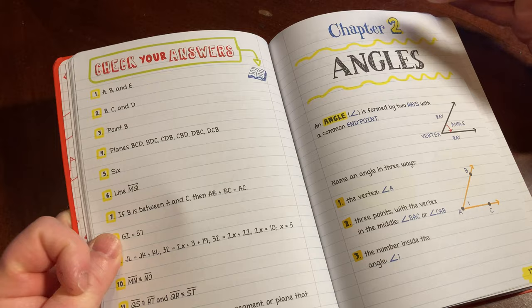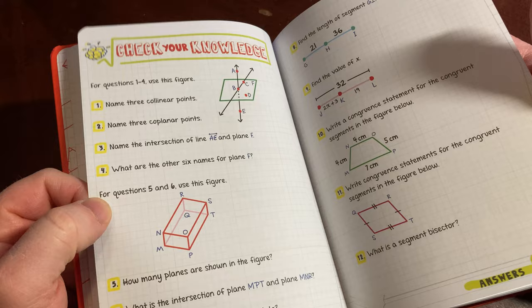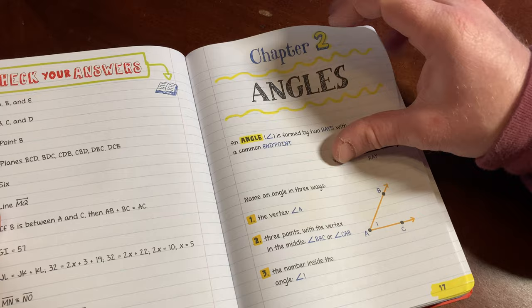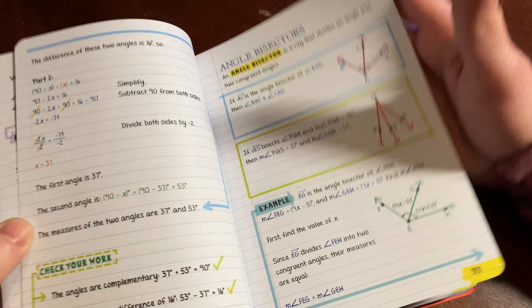So you have some content. You have some check your knowledge. And then you have check your answers. The next one's on angles. Again, just very nice layout. Perfect for learning, right? Perfect for learning. Really, really wonderful.